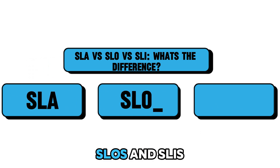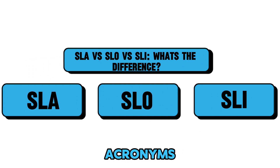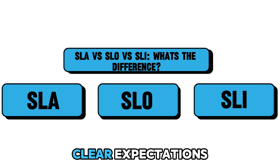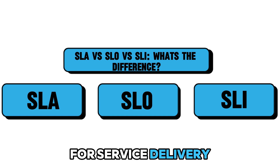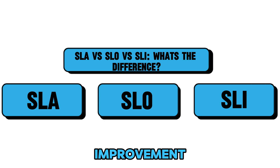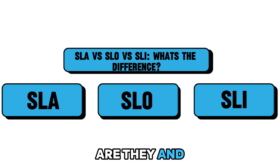SLAs, SLOs, and SLIs might sound like a jumble of acronyms, but they are crucial in setting clear expectations for service delivery, ensuring reliability, satisfaction, and continuous improvement. But what exactly are they, and how do they differ?